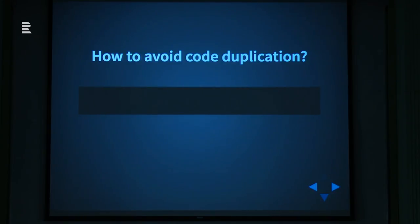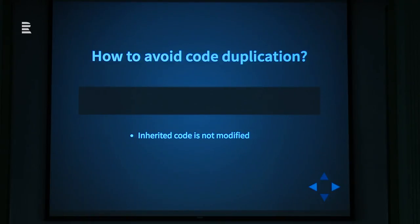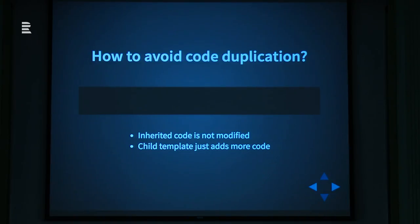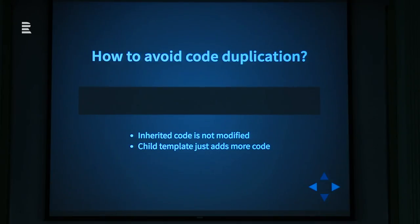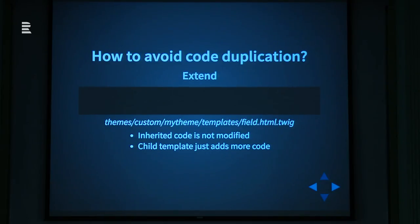Start with the simplest case: when you don't have to modify the inherited code, just want to make some additions. For example, you have a template for a field and you want to reuse that field somewhere else, but you want to add the label above it or just want to change a class. So how to do it? Is there an easy way in Twig for that? Of course we have one and it's called Extend.